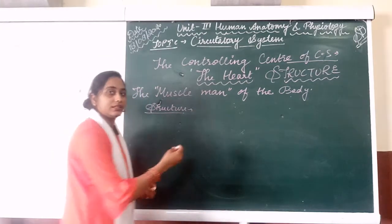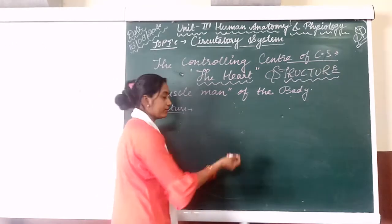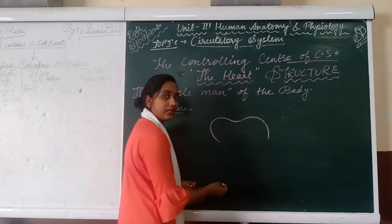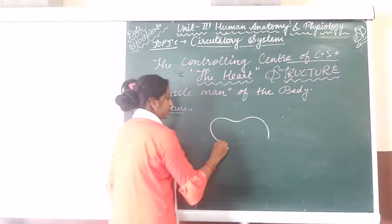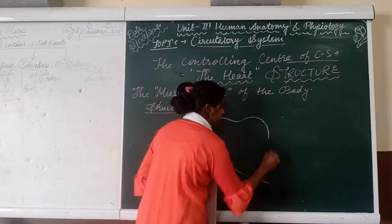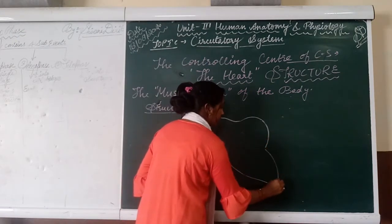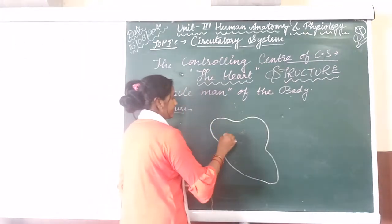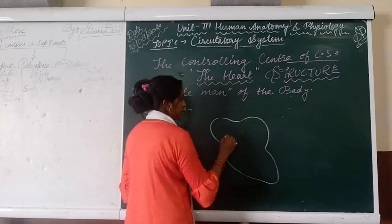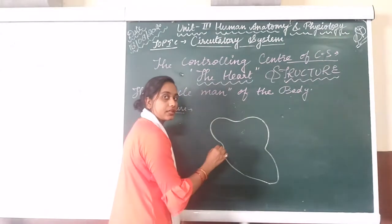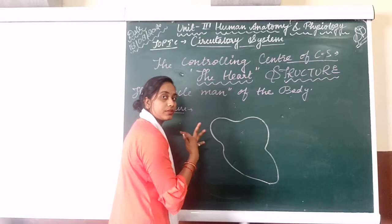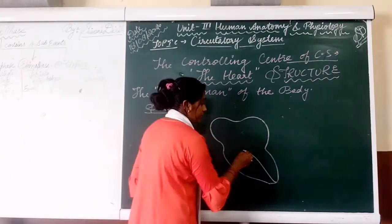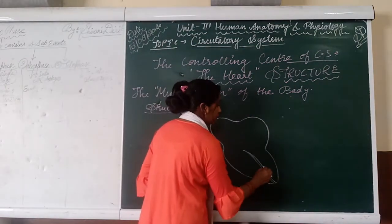First of all, I am going to start by making the outline of the heart. We will draw the outline of the heart as the basic shape. This is the outline of the heart, and if we divide this heart then there are four chambers in this heart, equally separated by a middle wall that is called the septum.